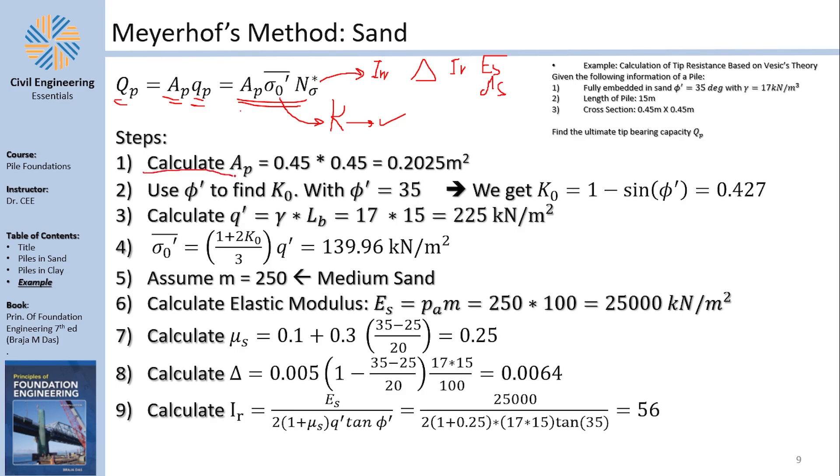First of all, we calculate Ap. Since it's a square, it's 0.45 times 0.45, no shenanigans whatsoever. To find K₀, we need ϕ. And with ϕ equals 35, we get K₀ equals 1 - sin(35°), which is this thing. Then we need q' because you need it in different ways. You need it for the σ̄ and you need it for, I think, Es. No, you need it for the Ir. Yes. Now here, this is the effective stress, which is γ by Lb, the embedment length, which is 17 by 50, which is this number.